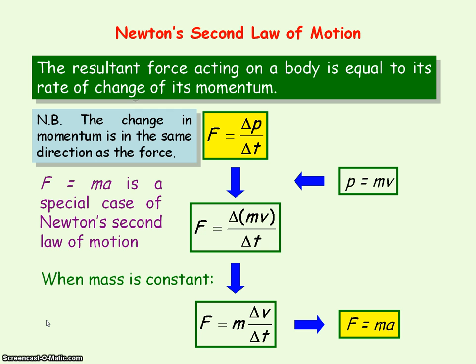If you remember from Einstein's special theory of relativity, mass increases when an object's velocity approaches the speed of light. So then this equation f equals ma will not be valid. However, the equation force is equal to the rate of change momentum will be valid. So it's valid for all situations, whether mass is constant or not.